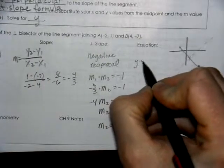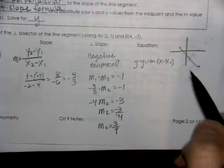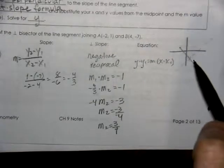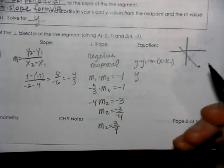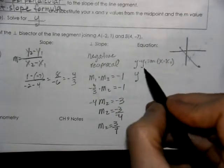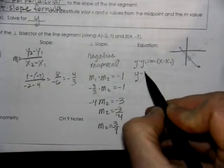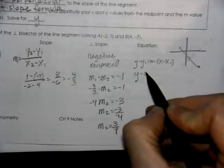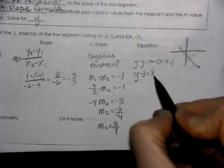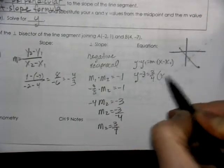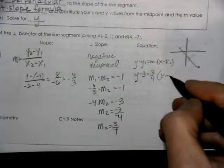So our equation is going to be Y minus Y1 equals M X minus X1. This is the point slope formula. Y is actually the variable Y, Y1 is a point that this line is going to go through, so we know that it goes through our midpoint. So that should be a negative 3 for the Y value. Our slope is 3 fourths. The X is 1.